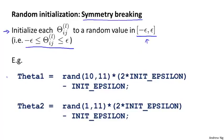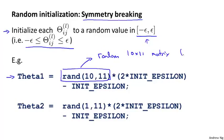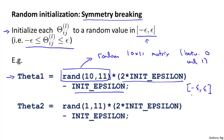The way I write code to do this in Octave is I might set theta1 to be equal to this expression. rand(10, 11) computes a random 10-by-11 dimensional matrix where all the values are between 0 and 1. If you take a number between 0 and 1, multiply it by 2 times epsilon, then minus epsilon, you end up with a number between minus epsilon and plus epsilon. Incidentally, this epsilon here has nothing to do with the epsilon used in gradient checking — it's an unrelated value, which is why I'm denoting it init_epsilon to distinguish it. Similarly, if you want to initialize theta2 to a random 1-by-11 matrix, you can do so using this piece of code.